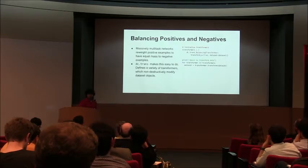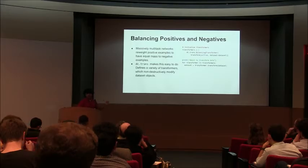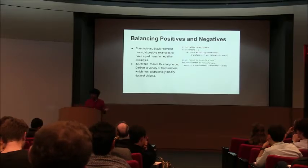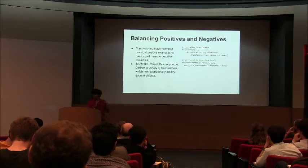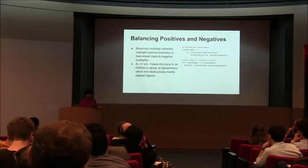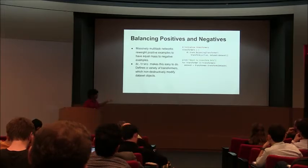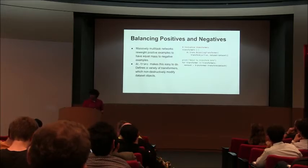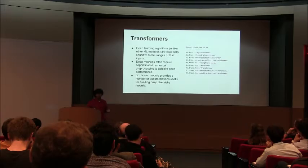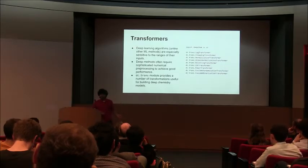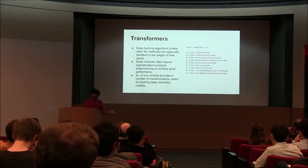Another important area is data transformation. One detail about massively multitasked networks that often gets missed is that you have to do fairly elaborate data transformations. Because most assays have very few positive examples — typically a 1-to-50 ratio — one trick is to multiply the weight of the positive examples 50-fold so they have commensurate influence on the network. Back at Google, we had a complex MapReduce transformation to do this. Here it's just a one-liner: make a transformer and then transform a dataset. We have a whole library of transformers supporting various standard transformations covered in the literature.